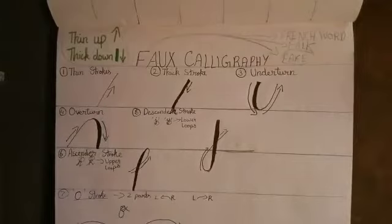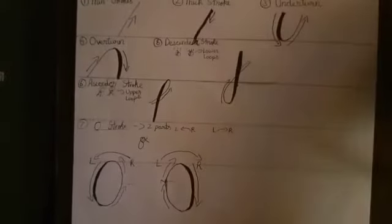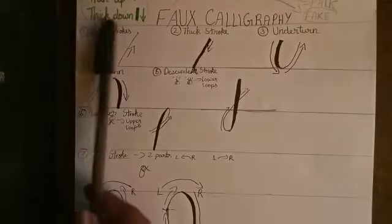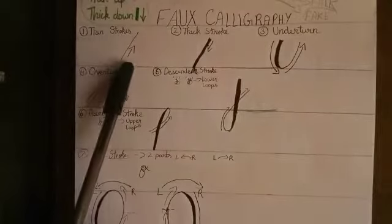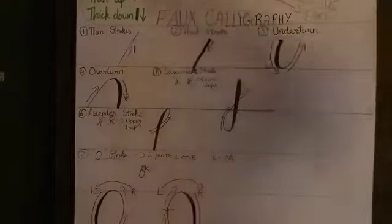These are the seven types of rules I'm going to show you. The first rule is thin stroke. When you go up, the stroke should be very thin.